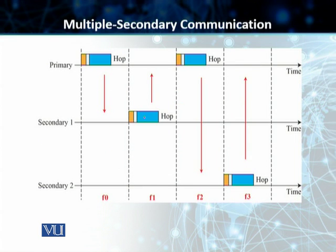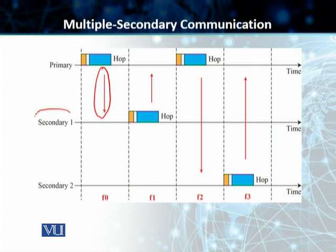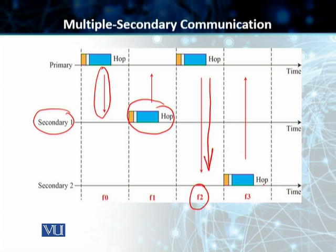In the multiple-secondary communication case, because there are multiple secondaries, the communication is more detailed. The primary still uses even-numbered slots, but a secondary only sends in the next odd-numbered slot if the packet in the previous even slot was addressed to that particular secondary. For example, if the primary sends in an even slot and the packet is addressed to secondary 1, then only secondary 1 communicates in the next slot. If the next packet is addressed to secondary 2, then secondary 1 stays quiet and secondary 2 communicates in that odd slot. This is how TDD TDMA communication works in Bluetooth.